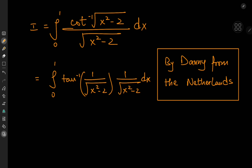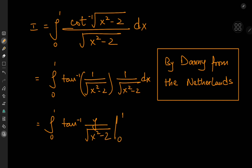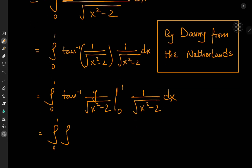Now that we have this inverse tangent term, let's translate our integration problem into a double integral by writing this as the integral from 0 to 1 of the inverse tangent of y divided by root x squared minus 2. The limits 0 and 1 make sense: as y approaches 0 we get inverse tangent of 0, which is 0, and as y approaches 1 we recover the original integrand. We know the integral with respect to y should have in the denominator 1 plus y squared divided by x squared minus 2.